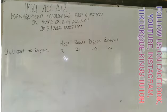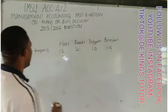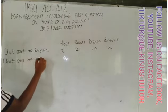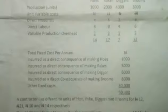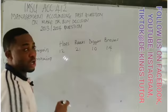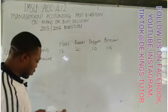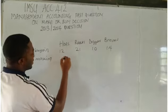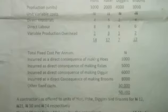The next step is to get the unit cost of making. The unit cost of making is the summation of the total variable cost shown in the question — that is, direct material, direct labor, and variable production overhead. This gives: holes = 14, rigs = 17, diggers = 7, and brooms = 12.